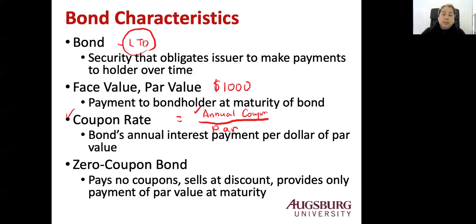Sometimes the bond does not pay any coupon and this is called a zero coupon bond. It pays no coupons but it sells at a deep discount, which means there's a price difference. You will pay a lower price than the par value, and you're going to receive par value at maturity so that you can realize your gain on the bond investment. We usually call these zeros.